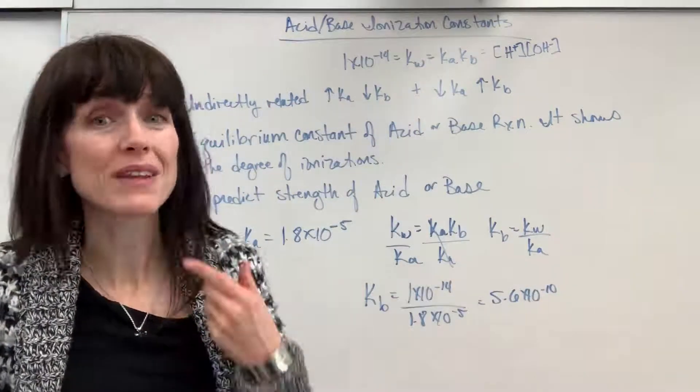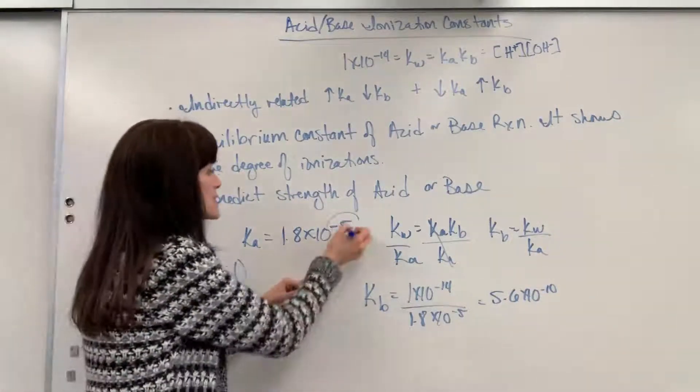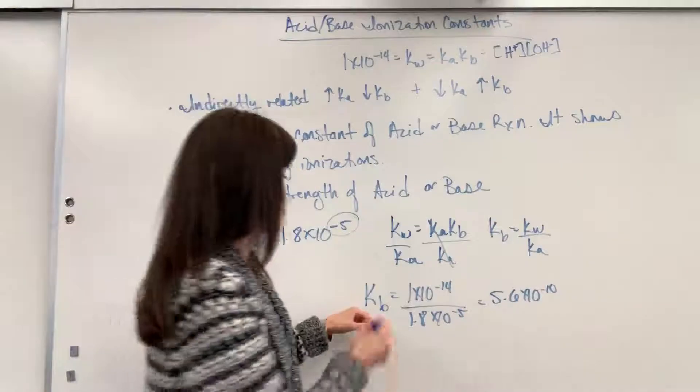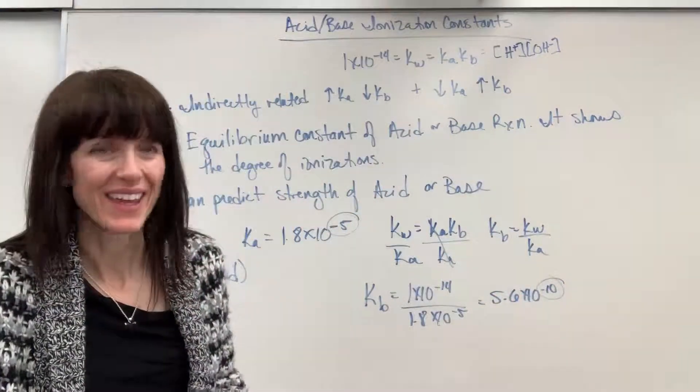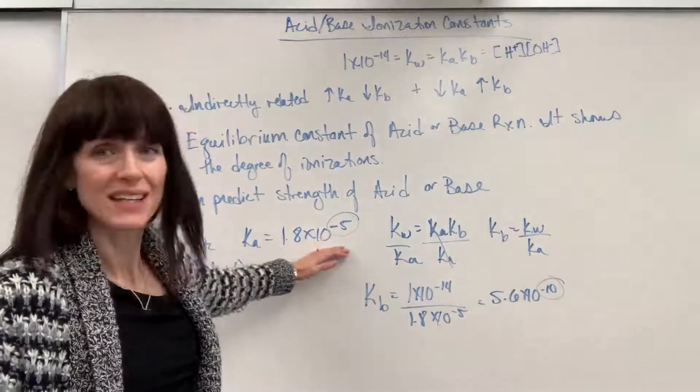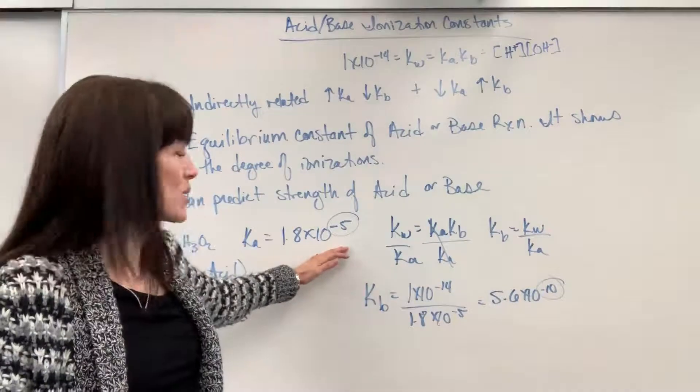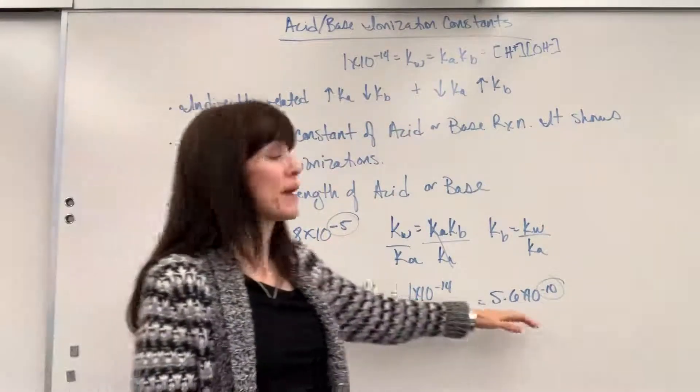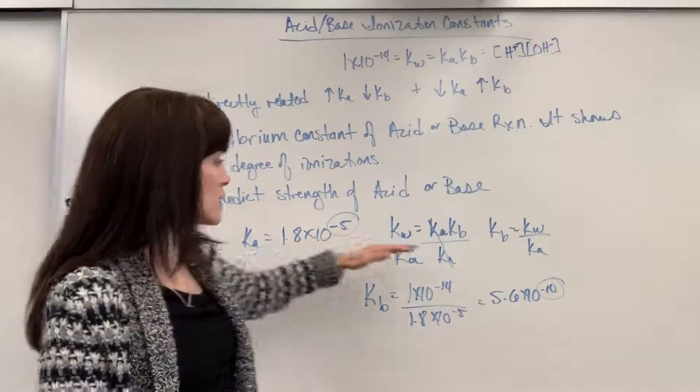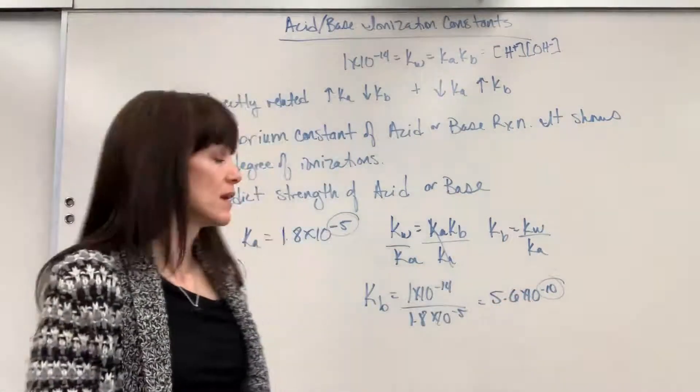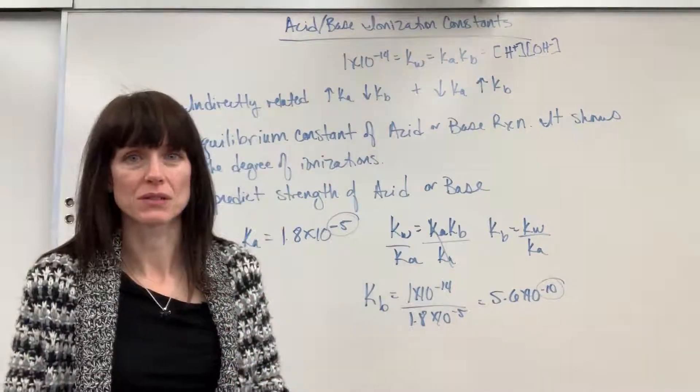Now, what I want you to notice is the relationship. We're going to have a Ka value, notice that's 10 to the minus 5, compared to a Kb value that's 10 to the minus 10. All right, this acid is going to have much greater dissociation, ionization, breaking apart, reacting with water, than the base. So, I'd say this acid is going to be stronger than its conjugate base. 10 to the minus 10, only a little bit of that's going to react.